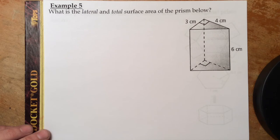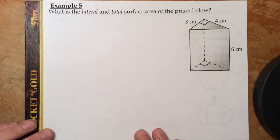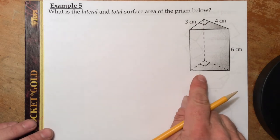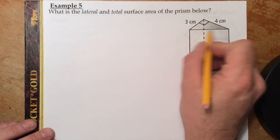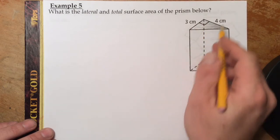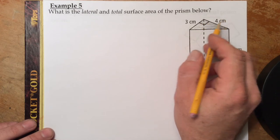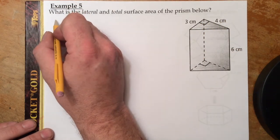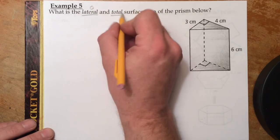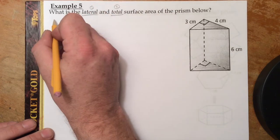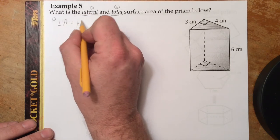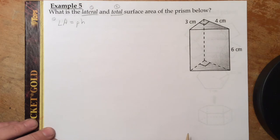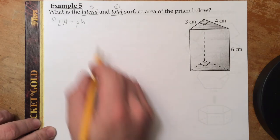Example 5: what is the lateral and total surface area of the prism below? Same instructions as Example 4, except this time instead of a rectangular prism, we have a triangular prism — a triangular base, which happens to be a right triangle. That helps us with base and height since they have to be perpendicular. Starting with lateral area: LA = P × H. The height of the prism from base to base is 6 cm.